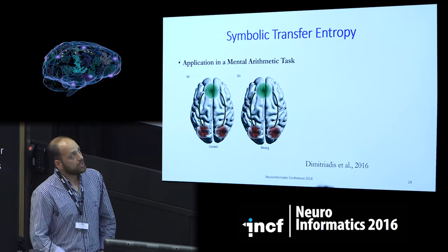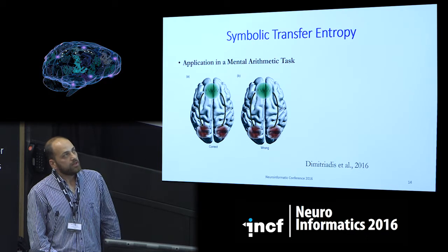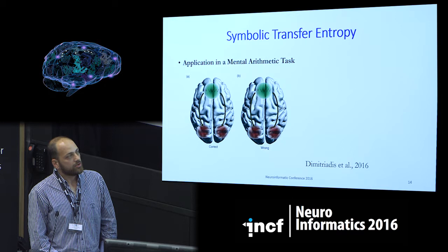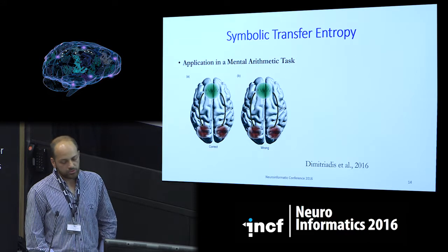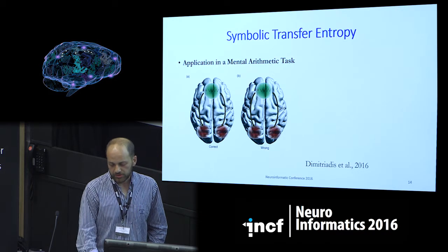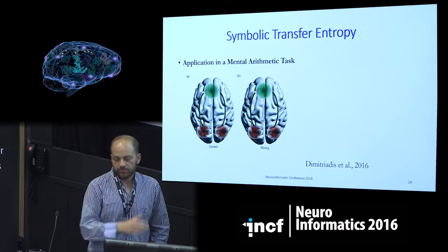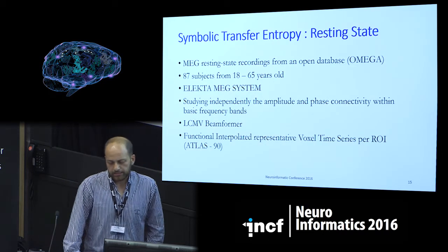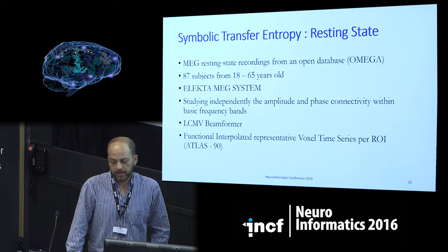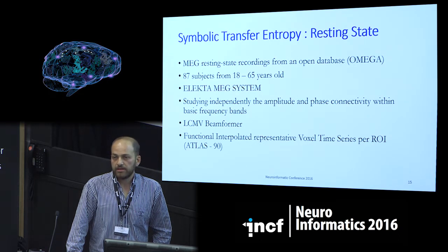Using this delayed symbolic transfer entropy, we succeeded in finding a non-zero time lag between left and right frontal areas compared to right parietooccipital alpha-2, which is one of the features that discriminates correct from wrong trials. This is the first demonstration of this symbolic transfer entropy approach: both the strength and the time lag matter to discriminate correct versus wrong trials. I applied symbolic transfer entropy to an open database provided by Mike Hill, Canada — 87 subjects from age 18 to 65 — using the Elekta system or source-localized using LCMV beamforming and the 90-region AAL atlas.